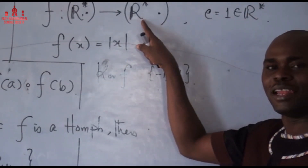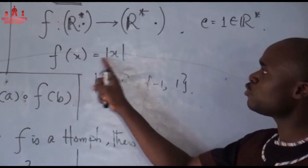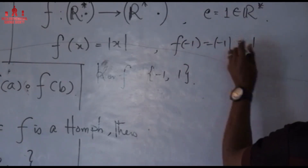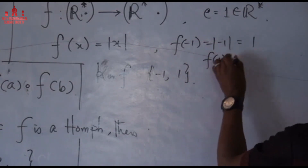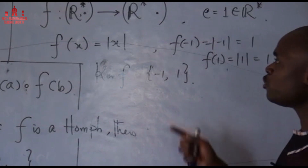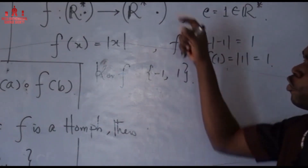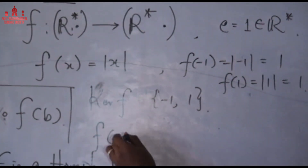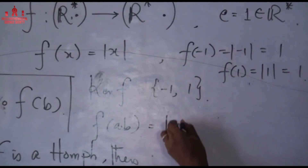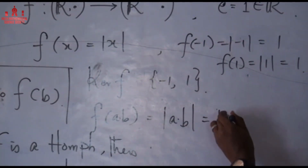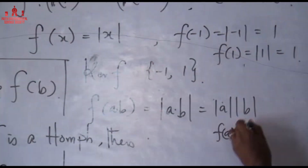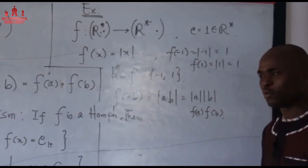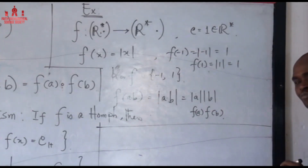The kernel of this f is {-1, 1}. When you substitute -1: f(-1) = |-1| = 1, the identity element. When you substitute 1: f(1) = |1| = 1. This is indeed a homomorphism because f(ab) = |ab| = |a|·|b| = f(a)·f(b). So {-1, 1} is the kernel of this homomorphism.